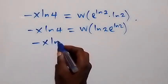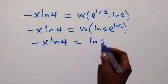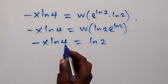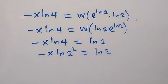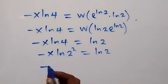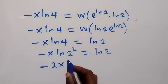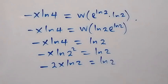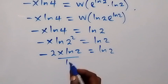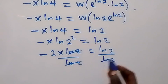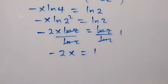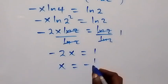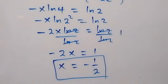Writing ln 4 as ln(2²) = 2 · ln 2, we have minus x times 2 · ln 2 equals ln 2. That is, minus 2x · ln 2 equals ln 2. Dividing both sides by ln 2, the ln 2 terms cancel and we get minus 2x equals 1, so x equals minus one half. That is the answer from method 1.